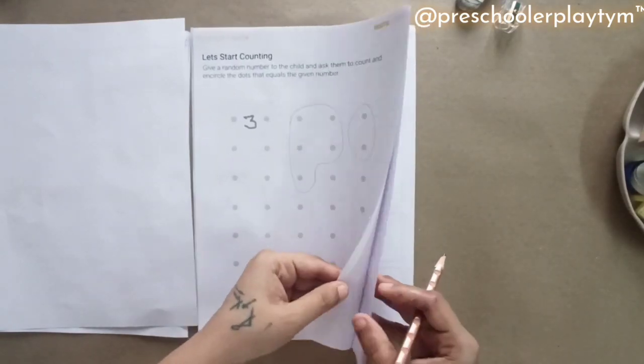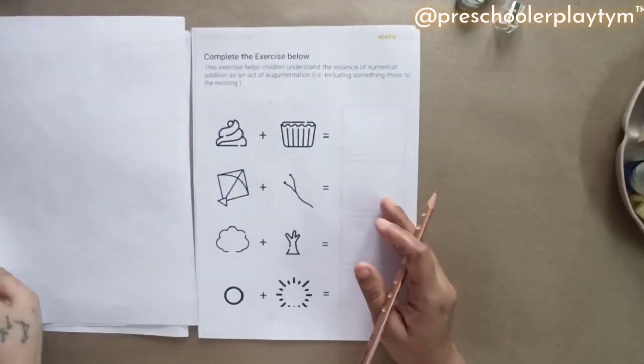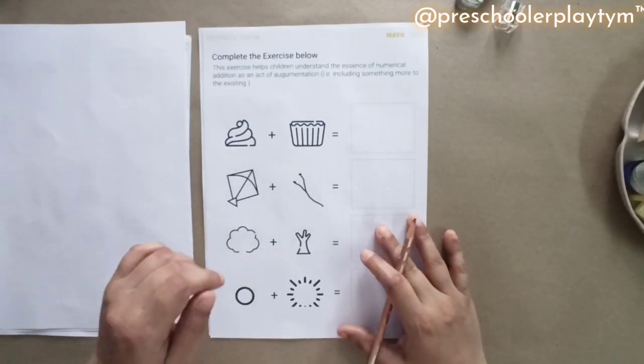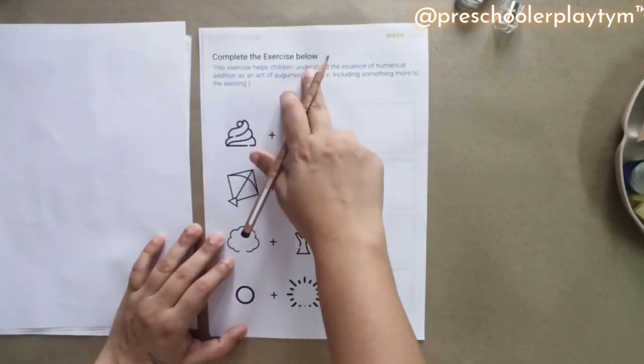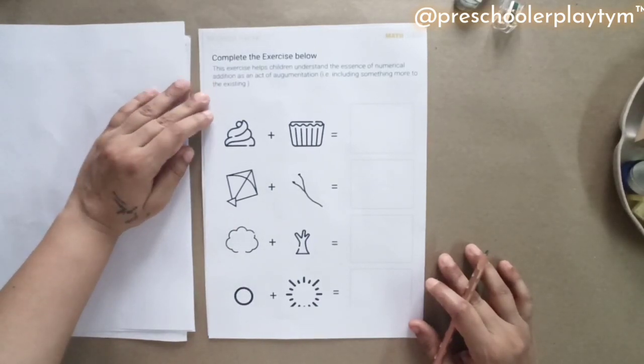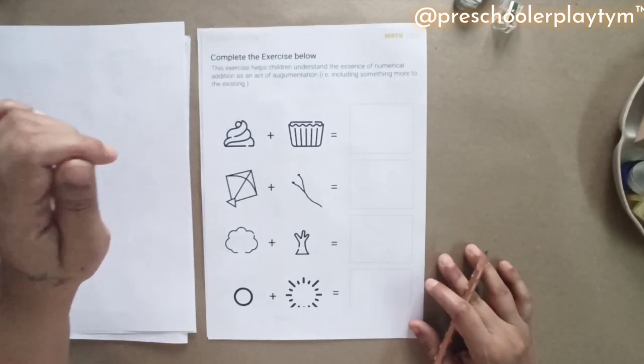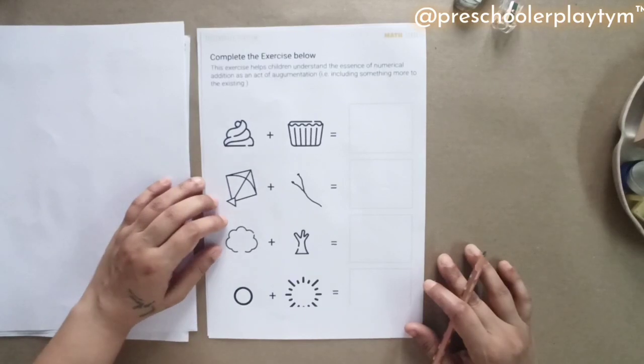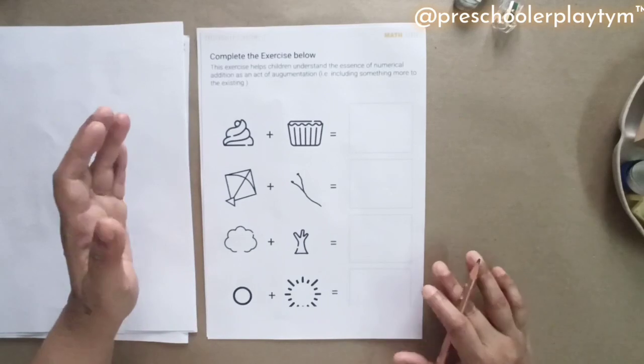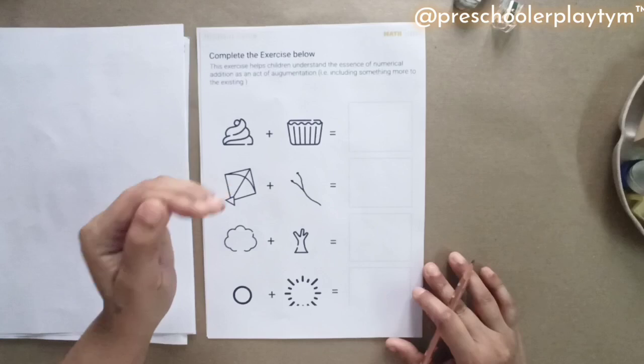Now my next sheet focuses more on the surrounding examples that's going to help your preschoolers and kindergarteners to learn addition, and it's a very interesting idea. You're going to love it for sure. Complete the exercise. This exercise helps children to understand the essence of numerical addition as an act of augmentation, including something more than existing. These activities have been associated with something of our daily lives, something they know about, something they must have tried, something they have seen.